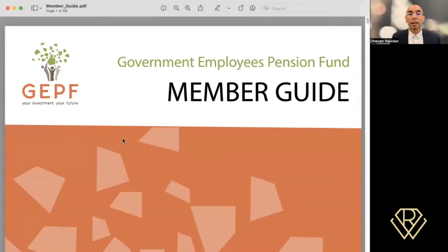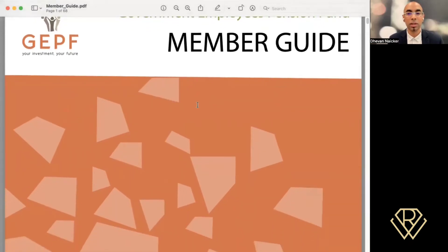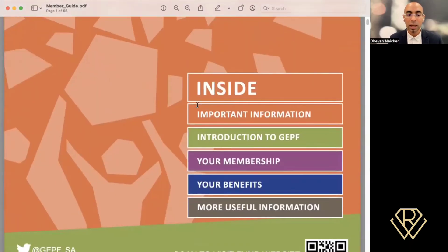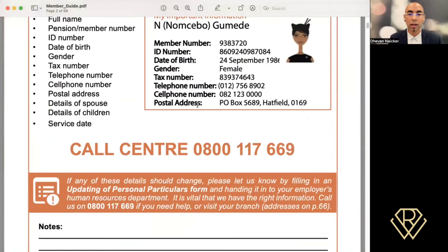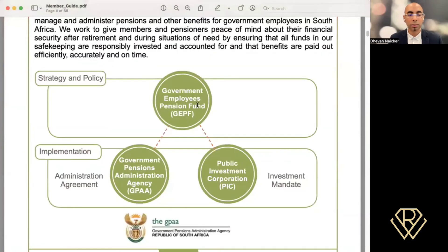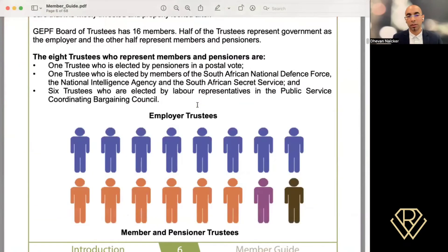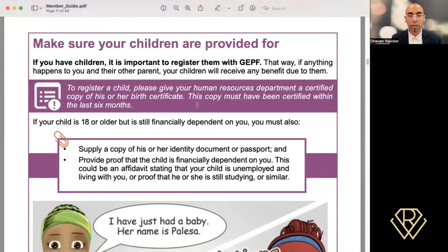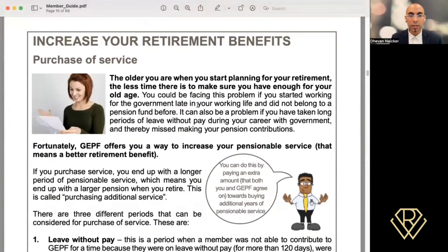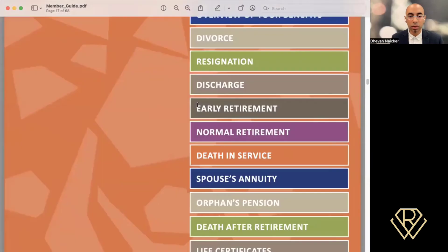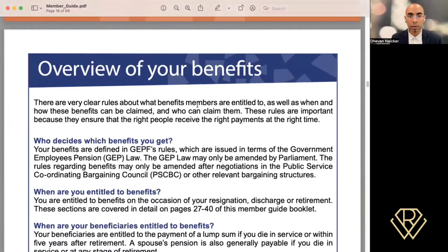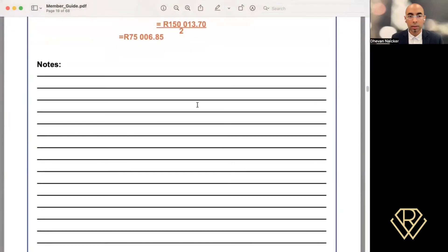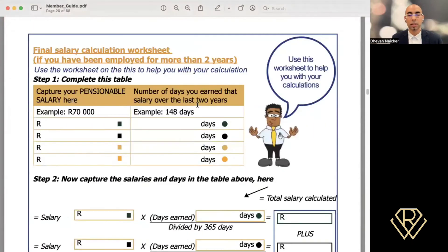So now I'm having a look at your member guide. You can get this for free off the GEPF website, you can download the latest member guide. You'll see it says government employees pension fund member guide. And we are going to have a look at page 20 of the guide that you're working with. Here we go. This is it.